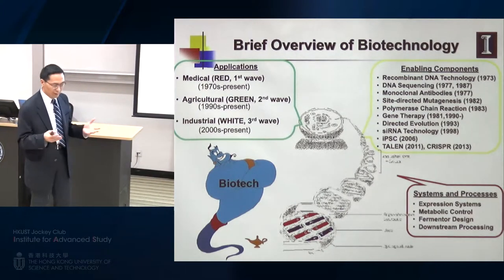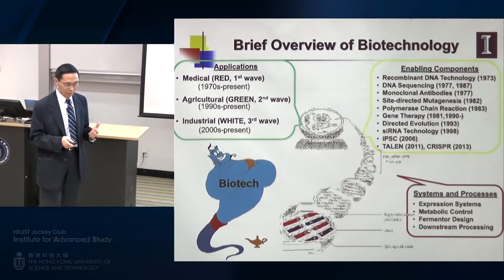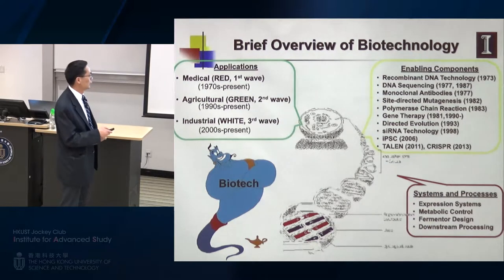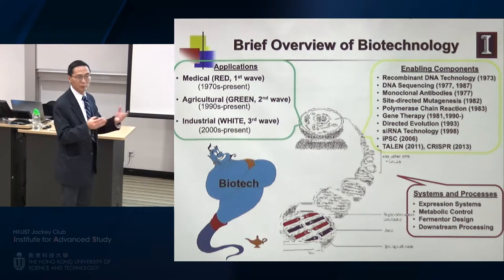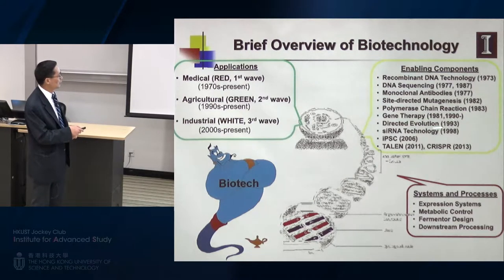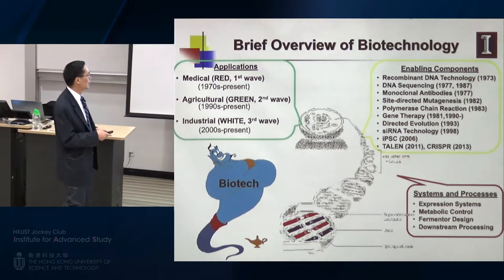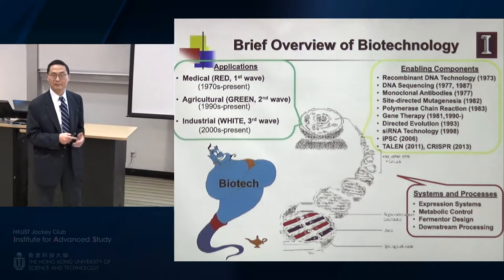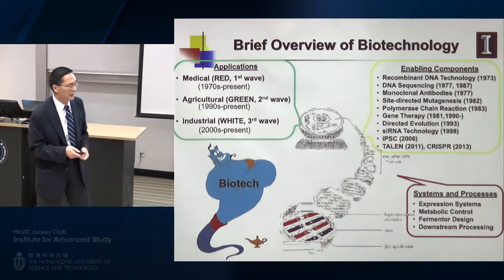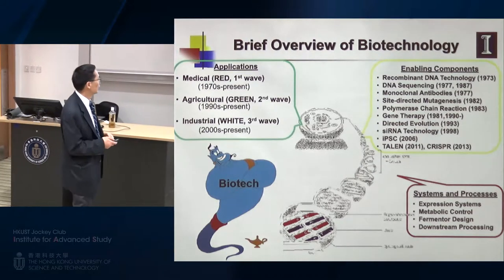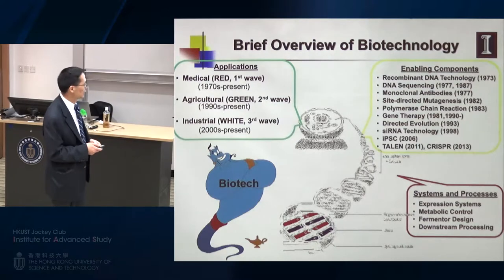If you look at the current biotech industry and biological science, they are driven by important transformative technologies: recombinant DNA technology invented in 1973, DNA sequencing, monoclonal antibody, site-directed mutagenesis, PCR, and directed evolution invented in the early 90s. More recently, genome editing and CRISPR. Most of the inventors of those technologies got Nobel Prizes, because they are transformative technologies that enable us to study biological systems much more efficiently.